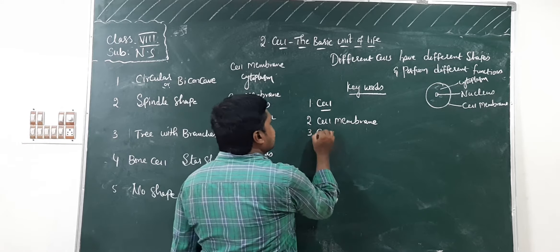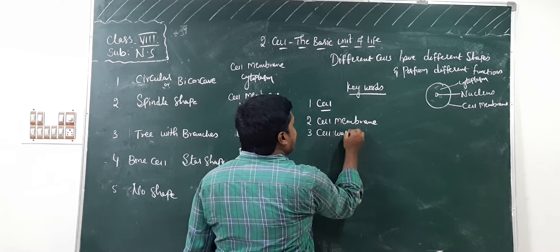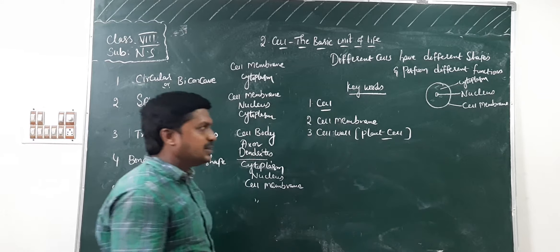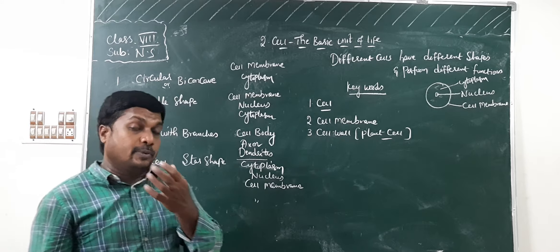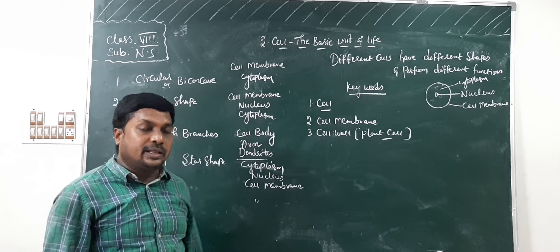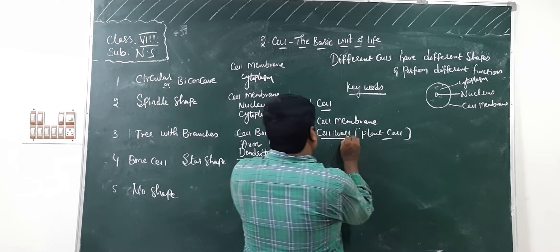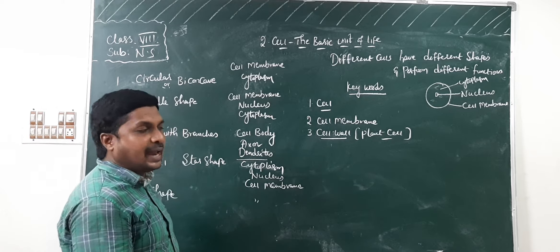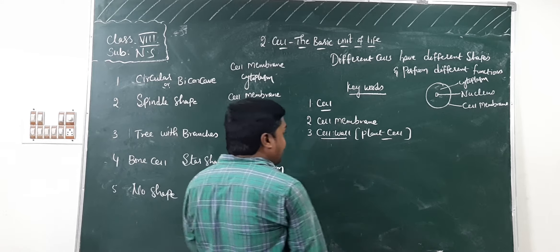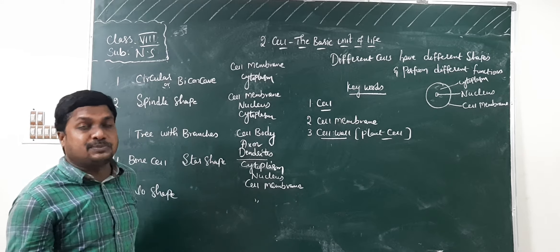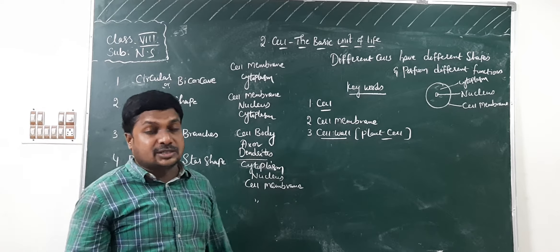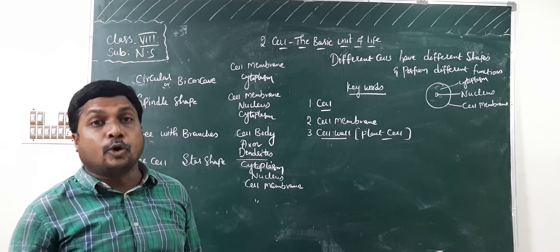Third keyword is cell wall. Cell wall is only present in a plant cell; it is absent in the animal cell. In an onion peel, you can find a cell wall. This cell wall gives protection and extra support to plants. If the cell wall is absent, the plant cannot stand straight or erect. Cell wall gives external support to the plant.